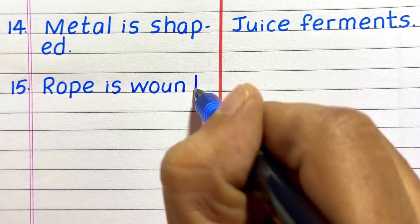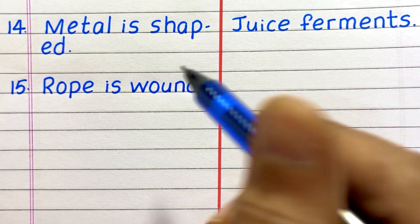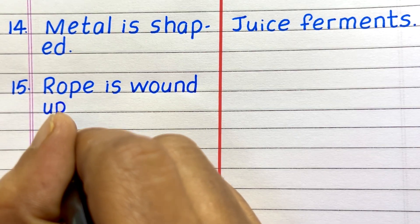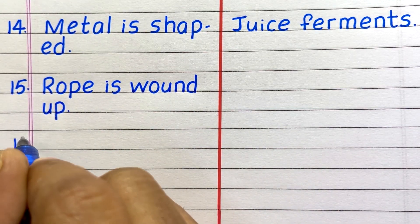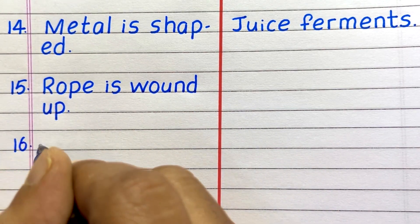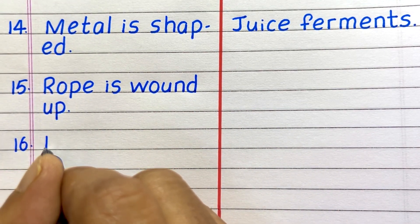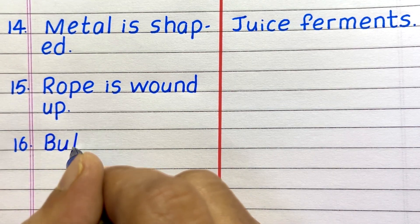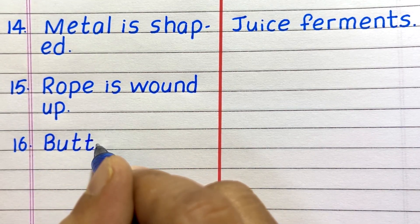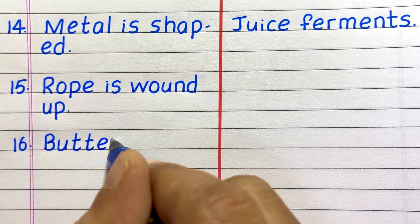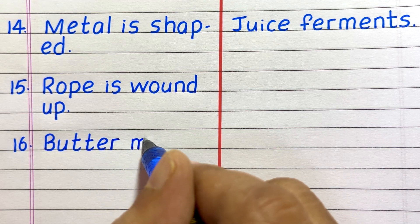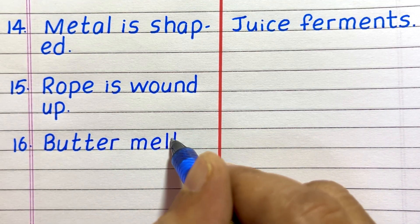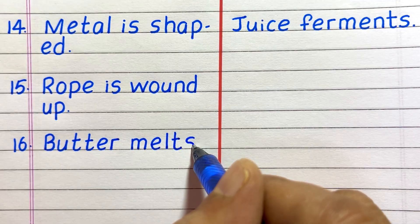Fifteenth example of a physical change is rope is wound up. Sixteenth, butter melts.